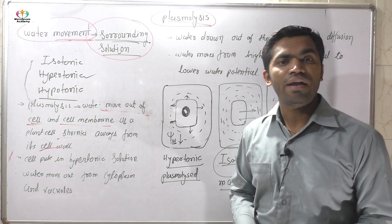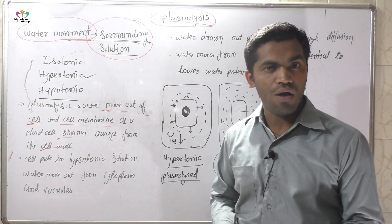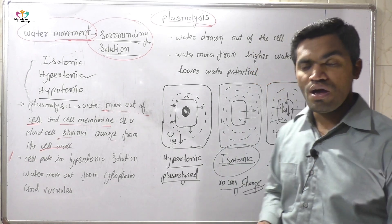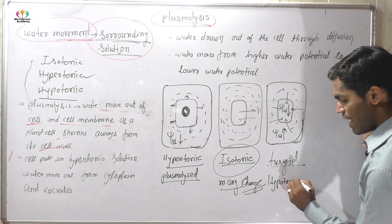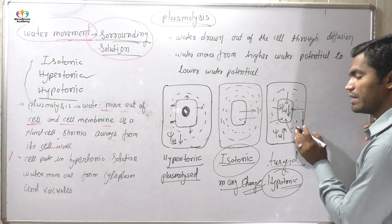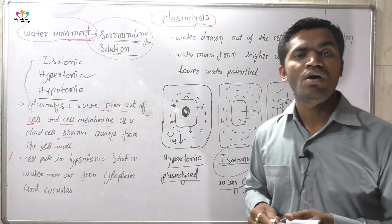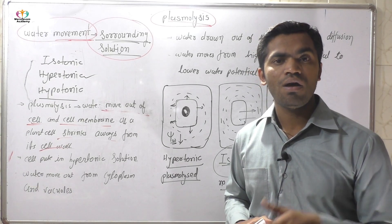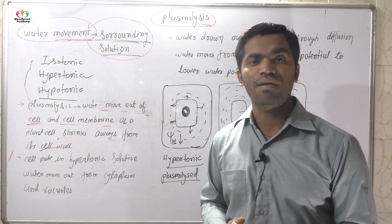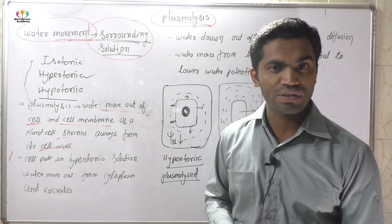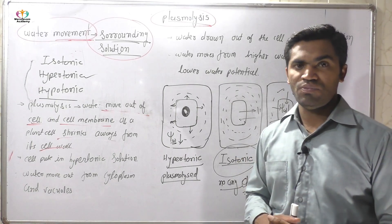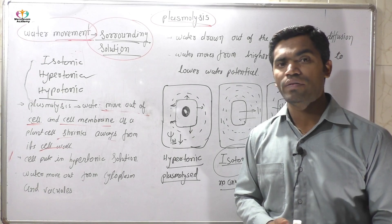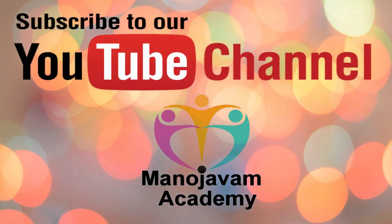When the cell becomes turgid, the cell membrane exerts pressure due to the water. The hypotonic solution has a higher amount of water than the cytoplasm, and due to this water concentration difference, water comes inside the cell. The cell fills with water, creating turgor pressure, and the cell condition is called turgid. So plasmolysis and turgidity depend on the surrounding solution of the cell.